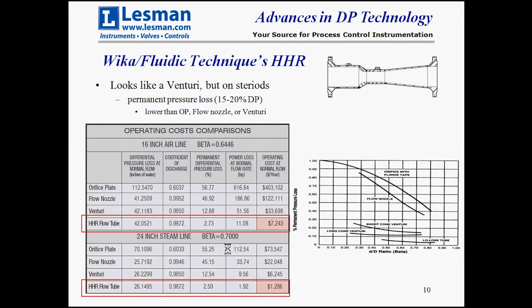The Vika or Fluidic Techniques HHR flow element looks like a venturi—and it is, a modified venturi on steroids. It has relatively low permanent pressure loss in the 15% to 20% range. A chart here shows that for a 16-inch air line or 24-inch steam line at a given beta ratio running 24-7, the flow tubes are far less costly to run than an orifice plate or flow nozzle because they have lower permanent pressure losses, placing them in the low-loss tube region of the chart.